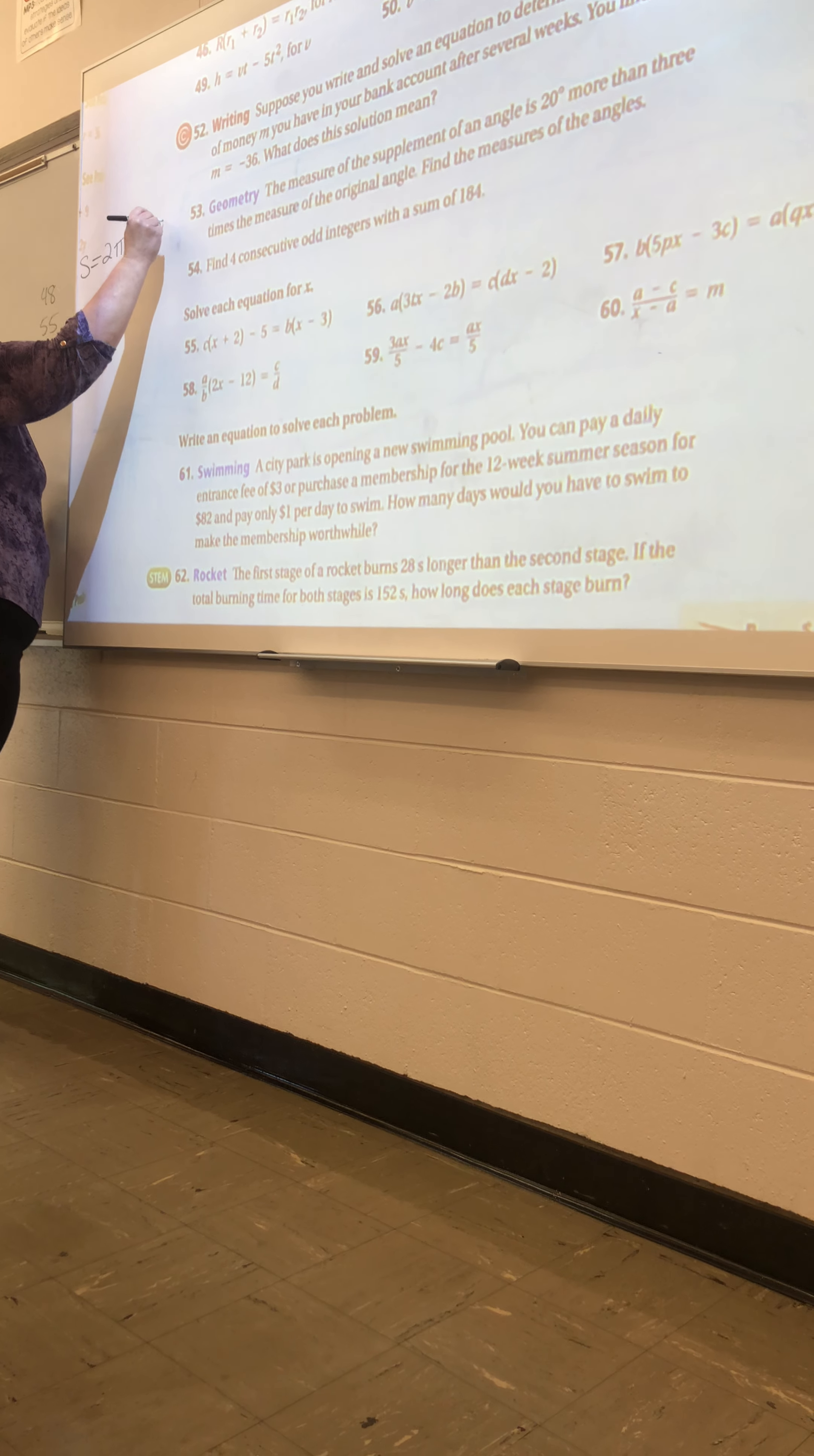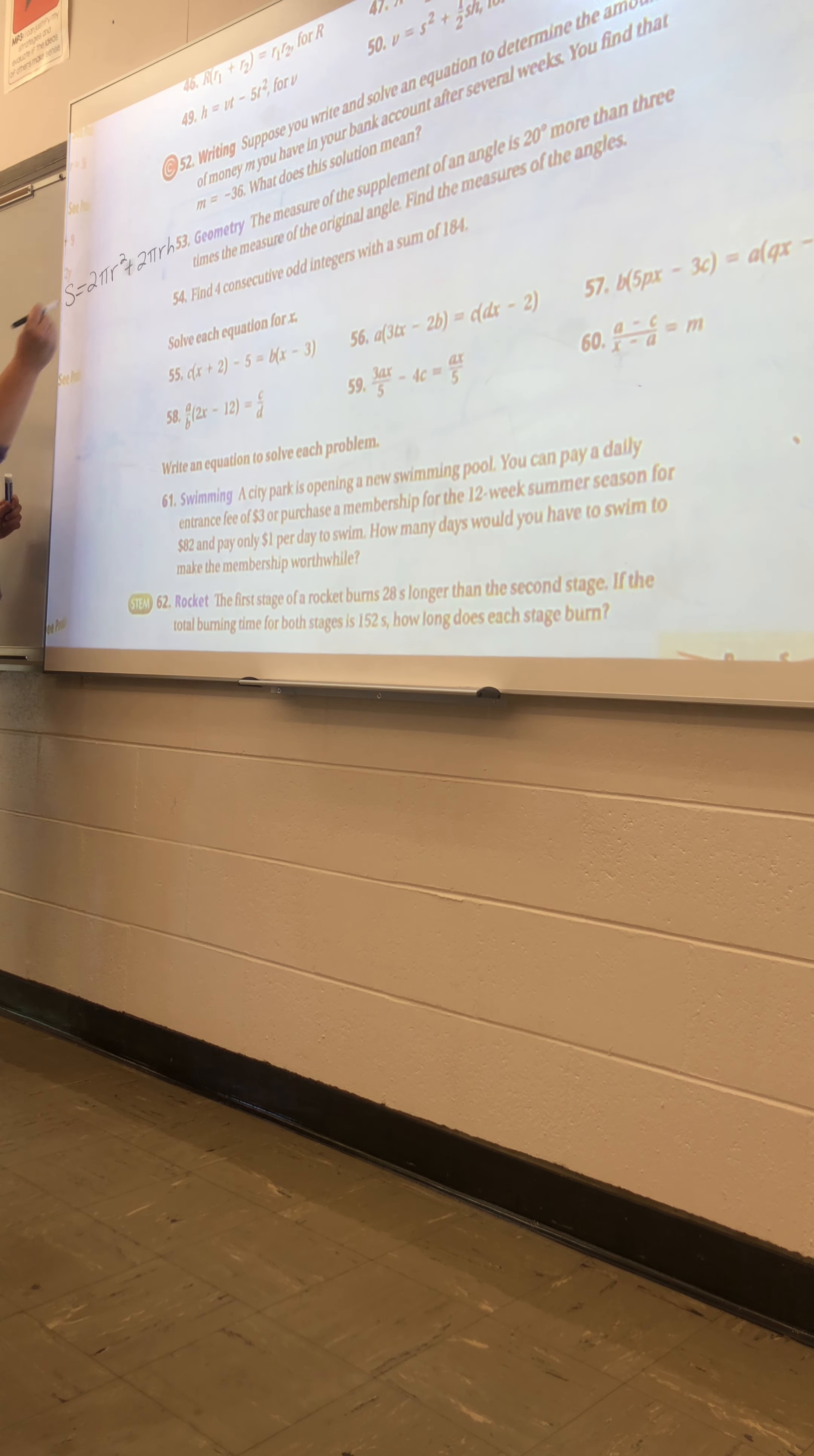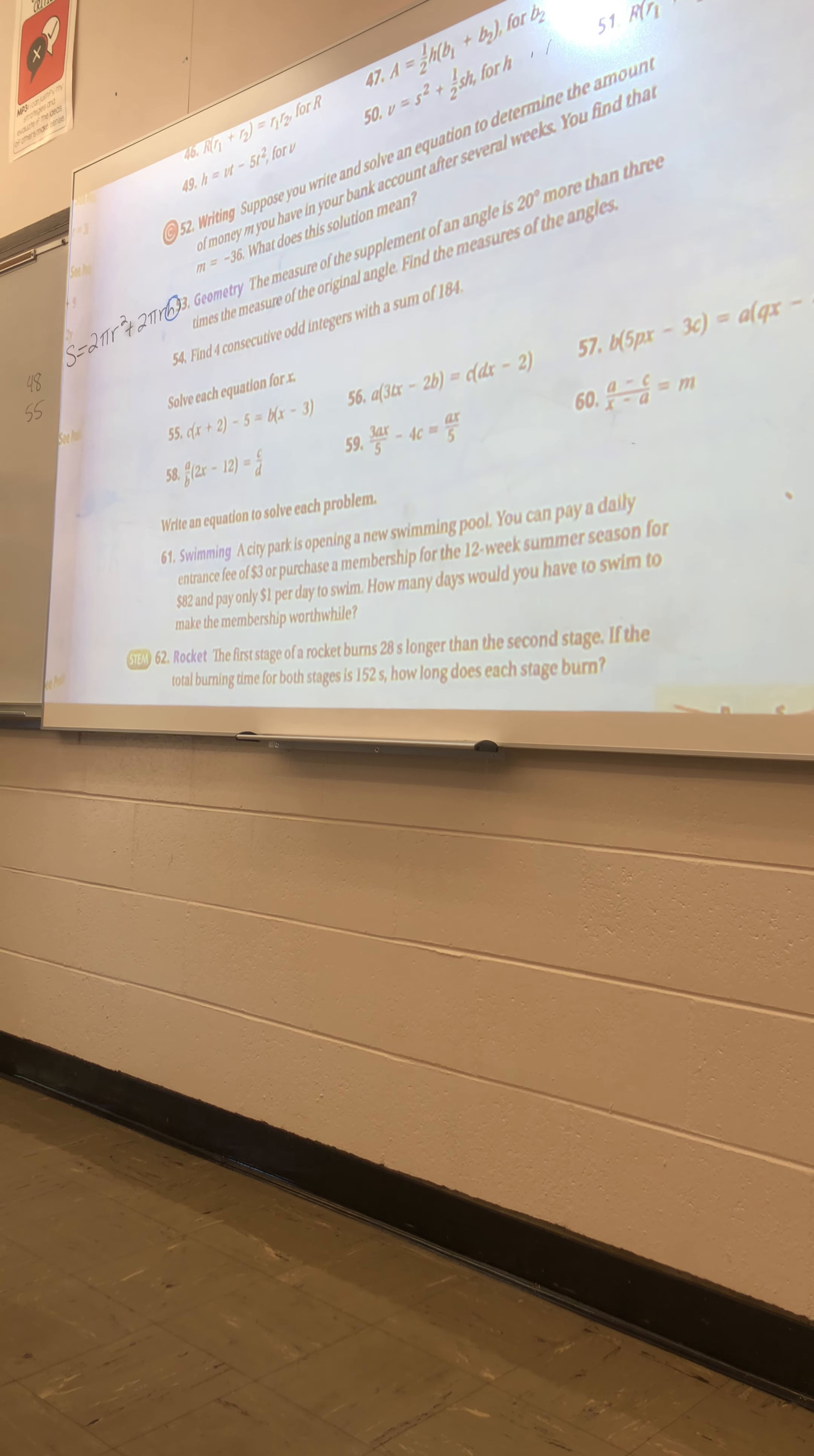2 pi r h. So we are solving for h. It occurs in just one place, so when something occurs in just one place, it makes it a lot easier. When it occurs in more than one place, it gets a little complicated.